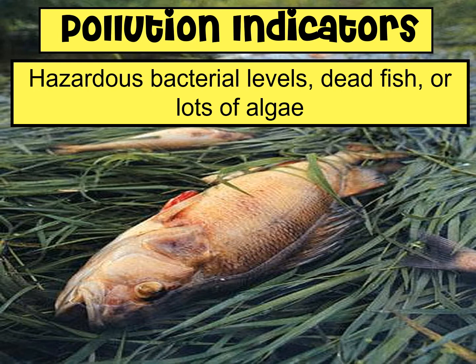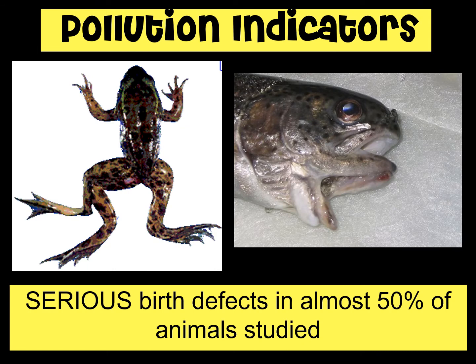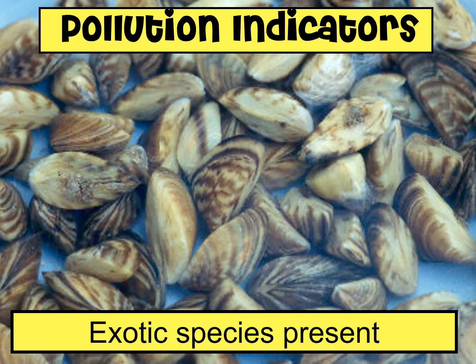When you come upon a waterway you might ask yourself, is this water polluted and how can you tell? There are certain indicators you can look for in a water source to see if it's polluted. Are there high levels of bacteria? Can you observe dead fish? Is there lots of algae growing? All of these things indicate that there's something in the water that probably shouldn't be there. Also take a look at the animals that exist there — are there serious birth defects or mutations present? Another indicator may be if exotic species are present, which usually indicates something's out of balance with the waterway.